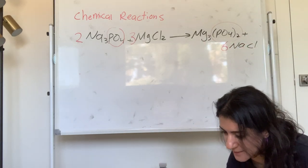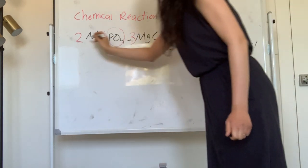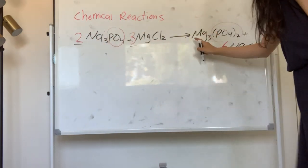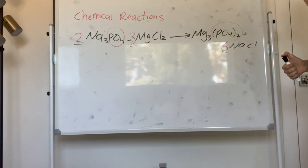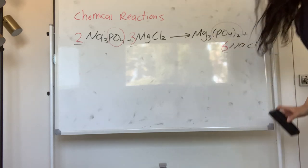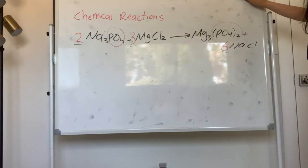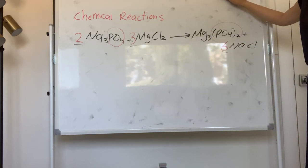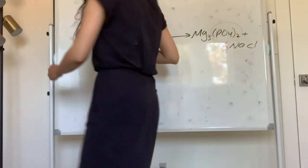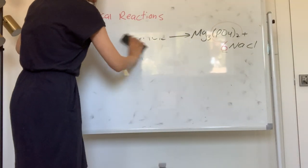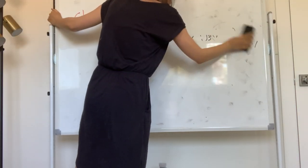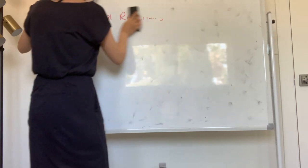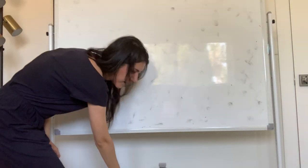This wasn't easy — it was a hard one. My coefficients are two, three, one (no coefficient), and six. That was balancing a chemical reaction. Practice balancing reactions, because we are going to do a lot of chemical reactions for the next couple of lectures. The key is balancing chemical reactions and treating polyatomic ions as one unit.